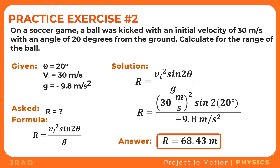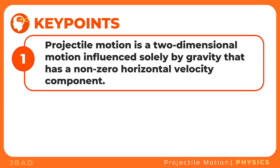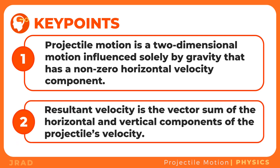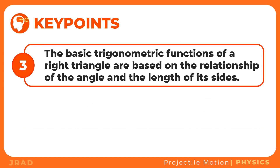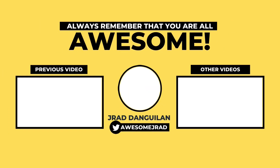Let's summarize the lesson. Projectile motion is a two-dimensional motion influenced solely by gravity that has a non-zero horizontal velocity component. Resultant velocity is a vector sum of the horizontal and vertical components of the projectile's velocity. The basic trigonometric functions of a right triangle are based on the relationship of the angle and the lengths of its sides. The concept of projectile motion also reminds us that what goes up must come down — so always be humble. If you like more science videos, make sure to subscribe to this channel.